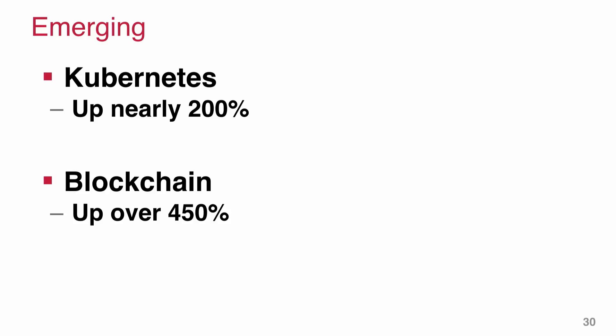We also see Kubernetes is up 200% and blockchain is up 450%, so these are things people are definitely exploring. The interesting thing about Kubernetes is that we don't think people go into it casually — Kubernetes is really for implementation. The big growth in it, both in search and usage, is really telling to us, and I'll be talking about that on the next slide.